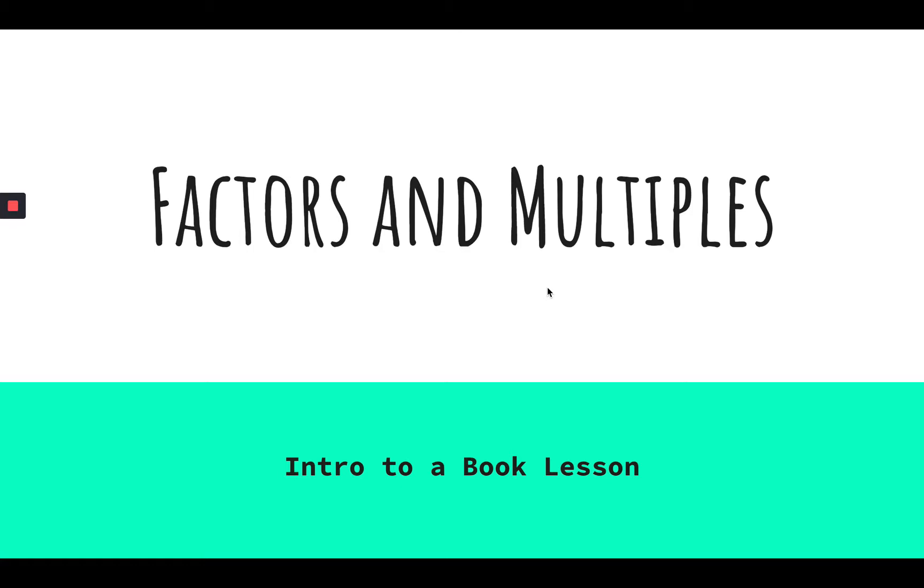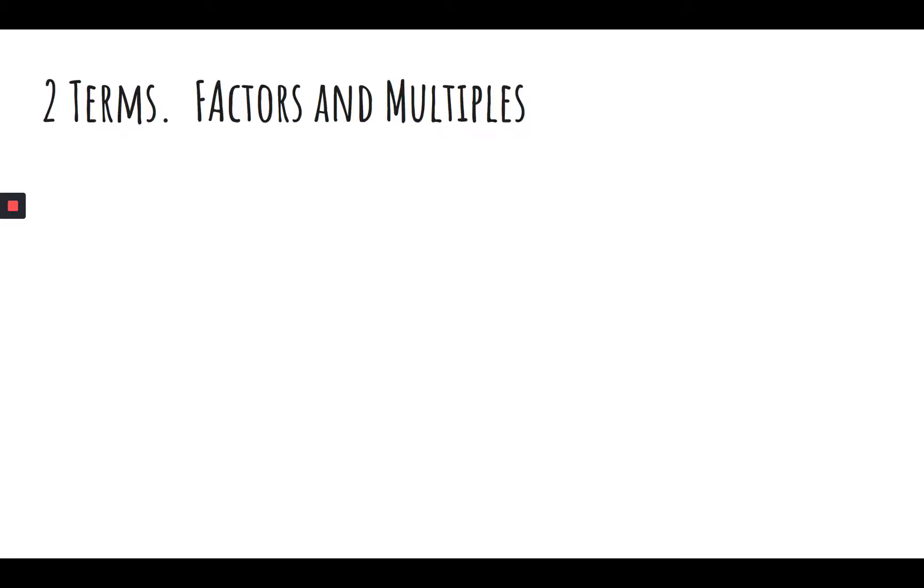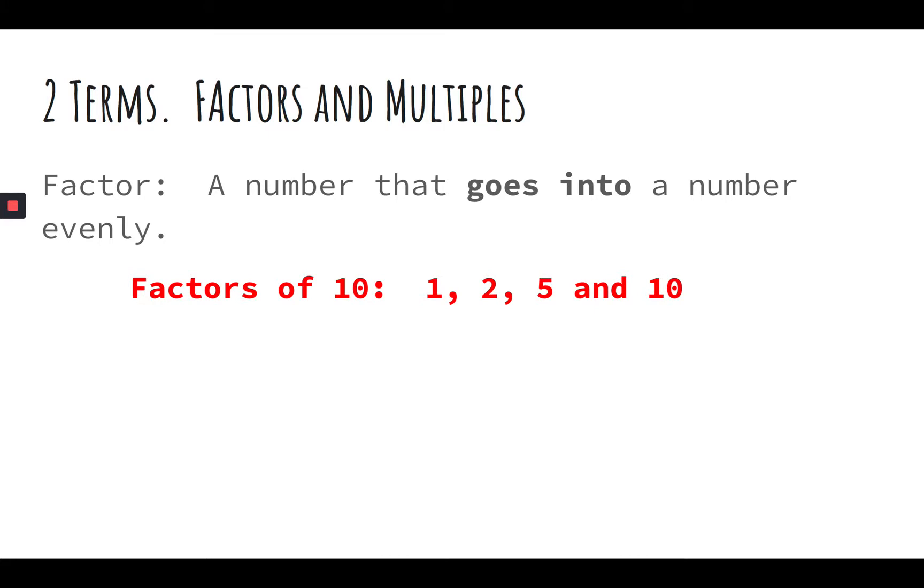So we're looking at factors and multiples. There's two terms, factors and multiples, that we're looking at today. First one is factor. And a factor is any number that goes into a number evenly. So a number that will fit into another number evenly. So factors of 10 include 1, 2, 5, and 10. All four of those numbers go evenly into 10.